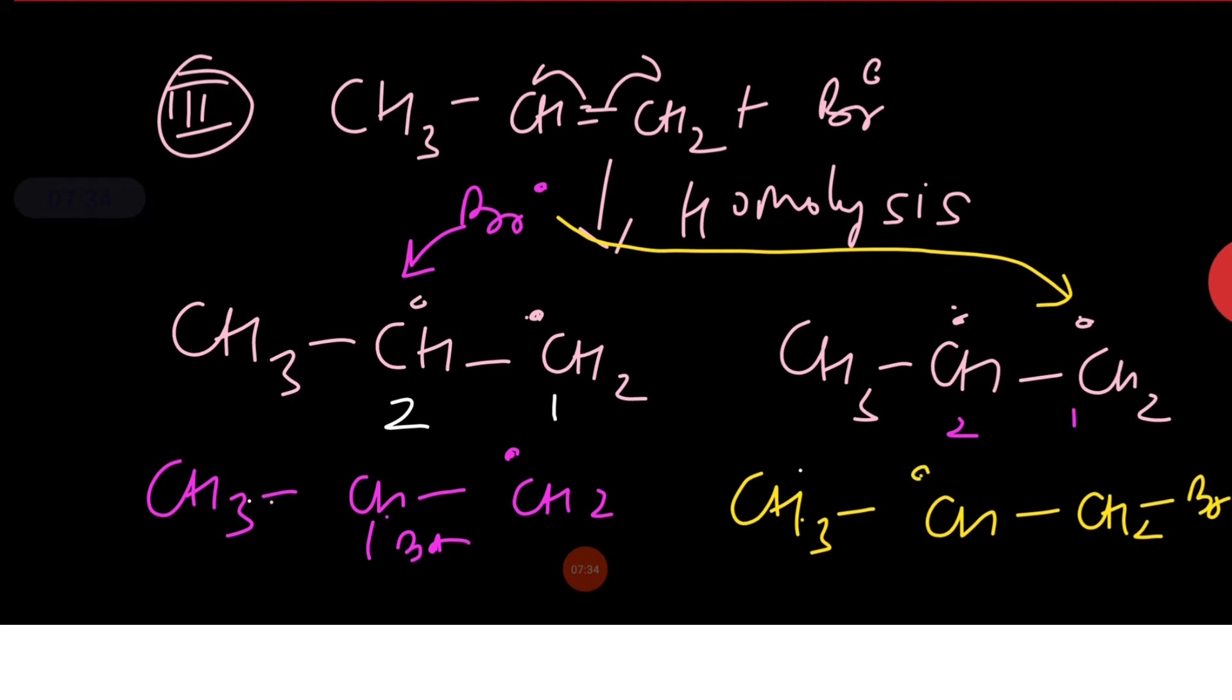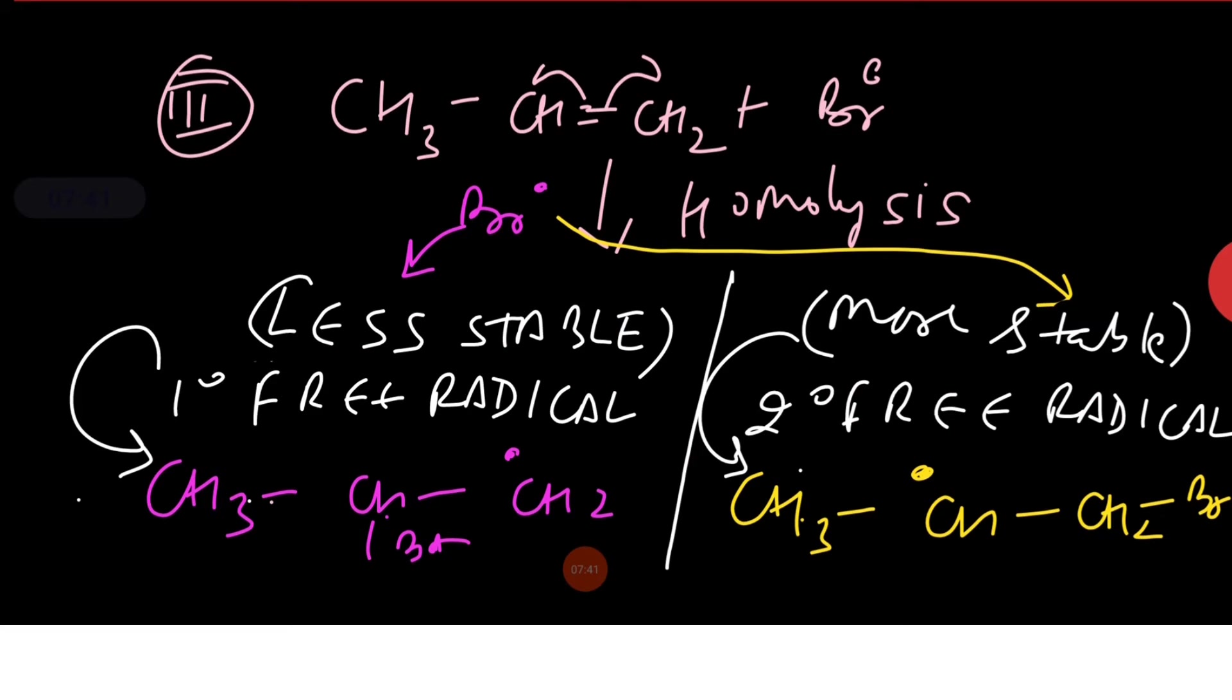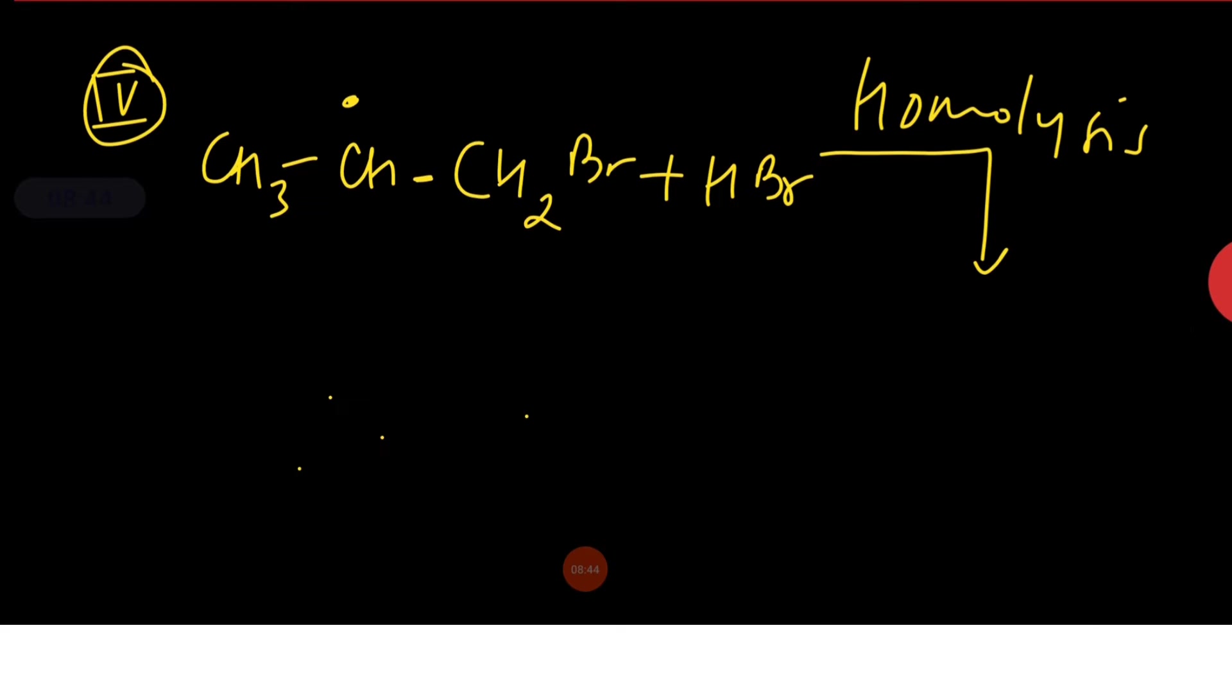secondary free radical is formed which is more stable. Therefore attack of HBr takes place on secondary free radical as follows.